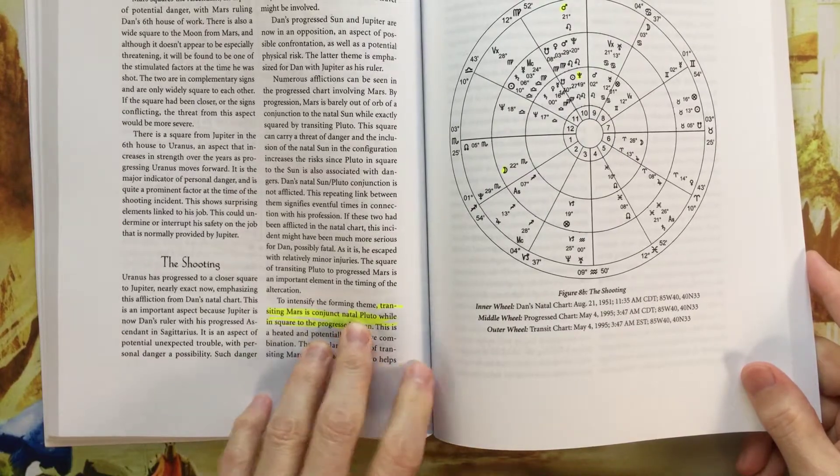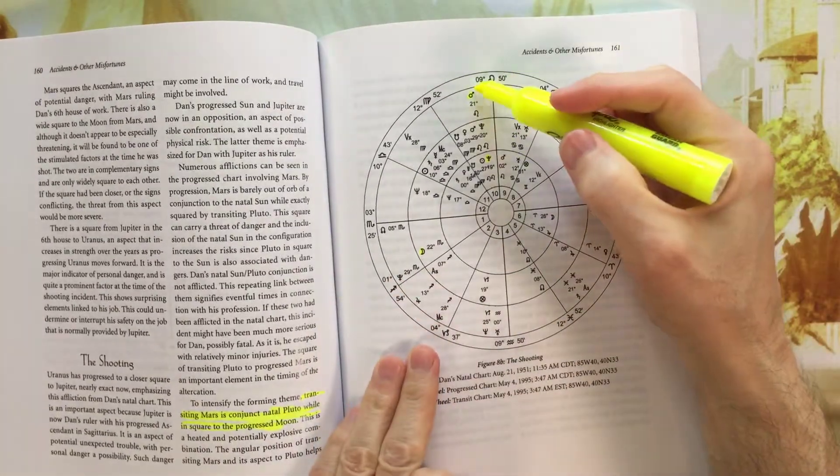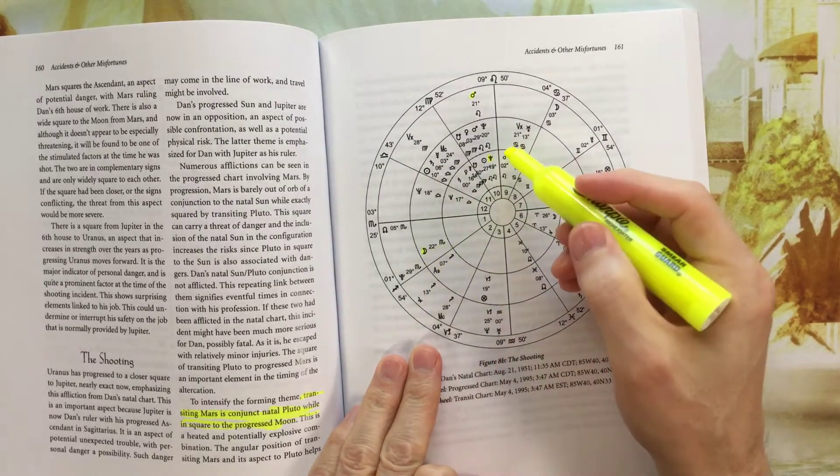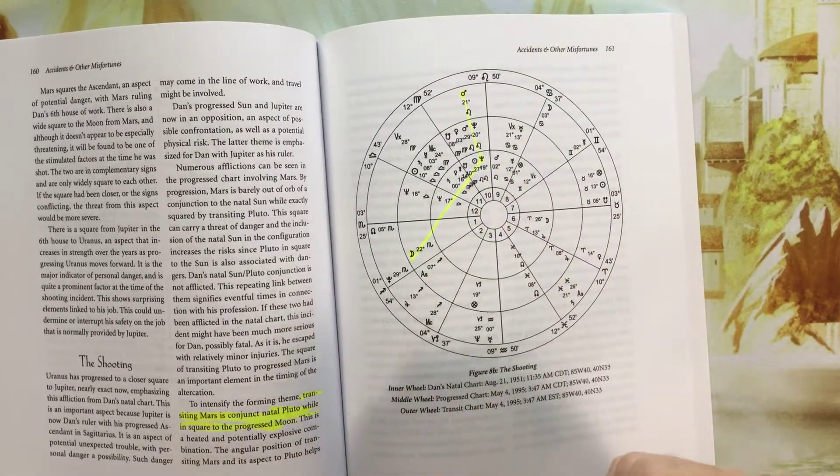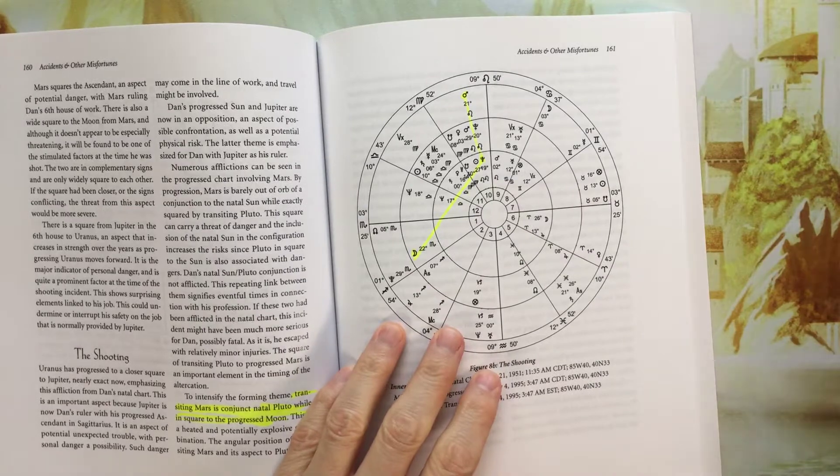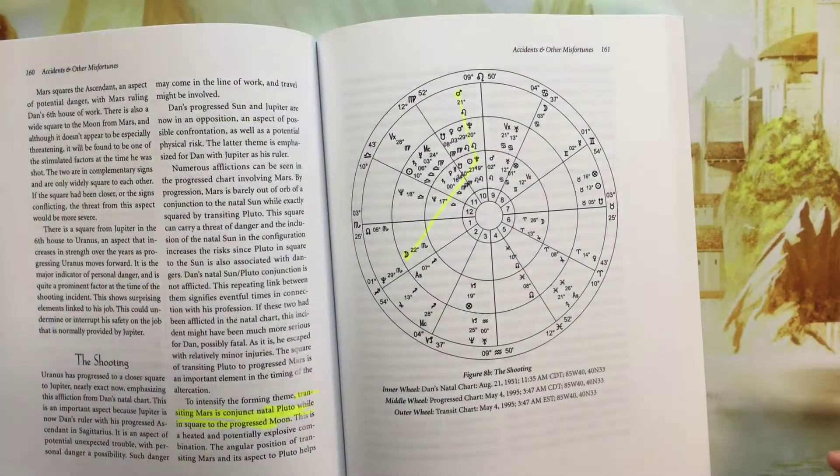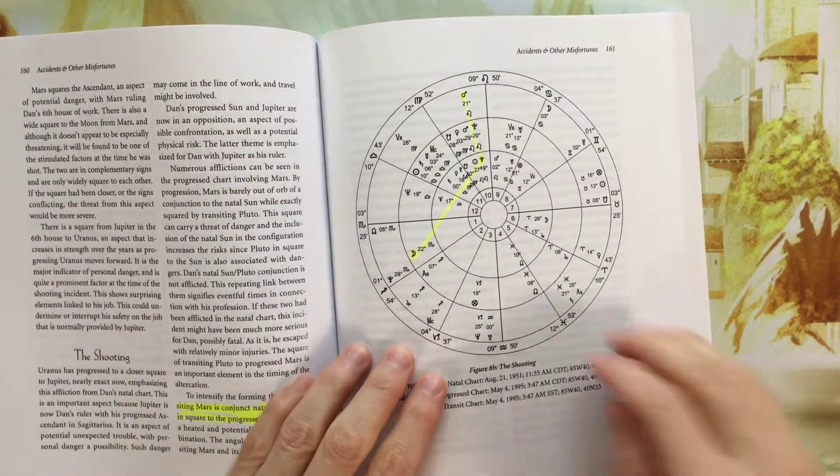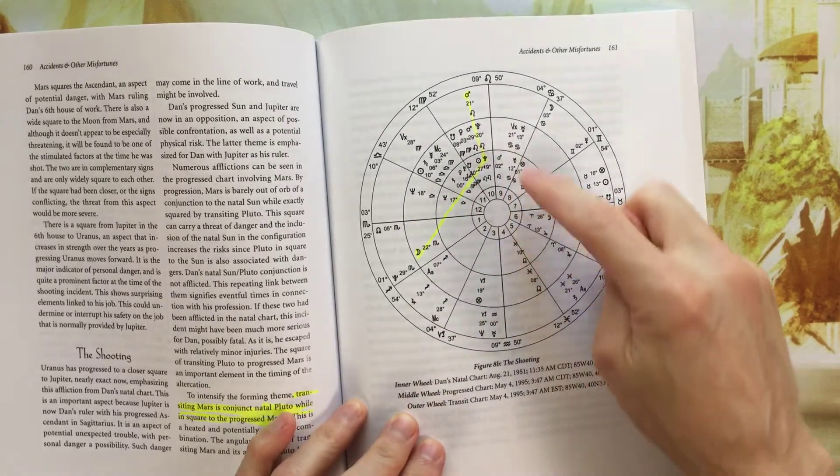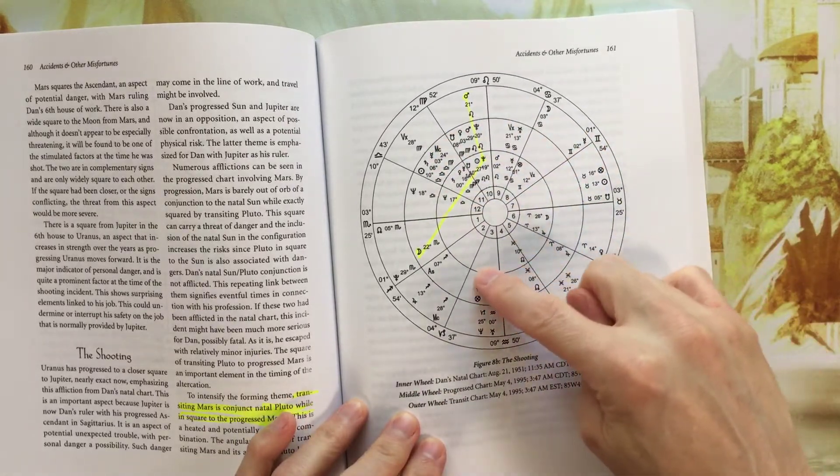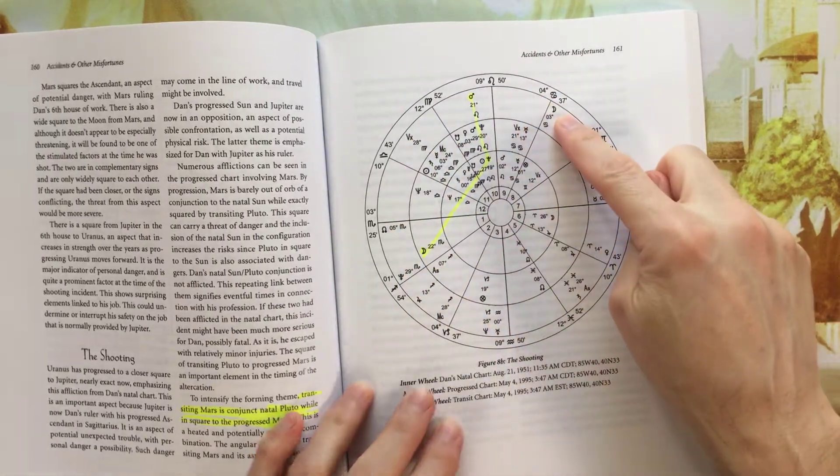So simple statement, transiting Mars is conjunct natal Pluto. So you have a tri-wheel chart, and here's the transit, here is the progressed, and here's the natal. So you basically need to eyeball the square. I'm not good enough to eyeball a square. I rely on my program or the website to give me some help. So you're going to need to understand that this is your natal, and this is progressed, and the progressed is jacking it forward four years. And then this is transit, so any transiting planets go around and around like that.